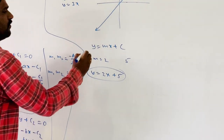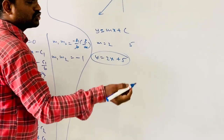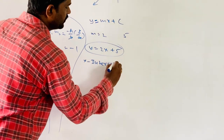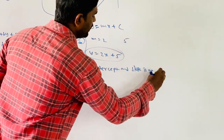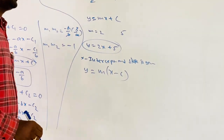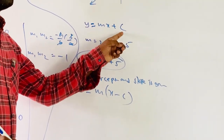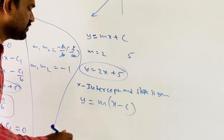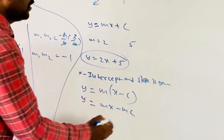We have another slope-intercept form when the x-intercept and slope are given. Then the equation is y = m(x − c), where c is the x-intercept. Observe the difference: when the y-intercept is given it is y = mx + c, and when the x-intercept is given it is y = m(x − c), which simplifies to y = mx − mc.